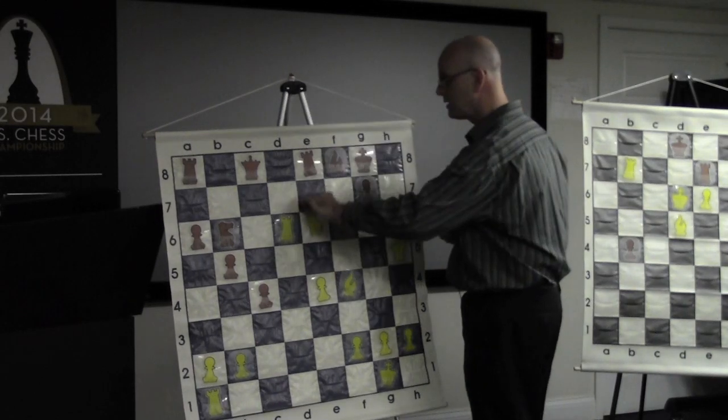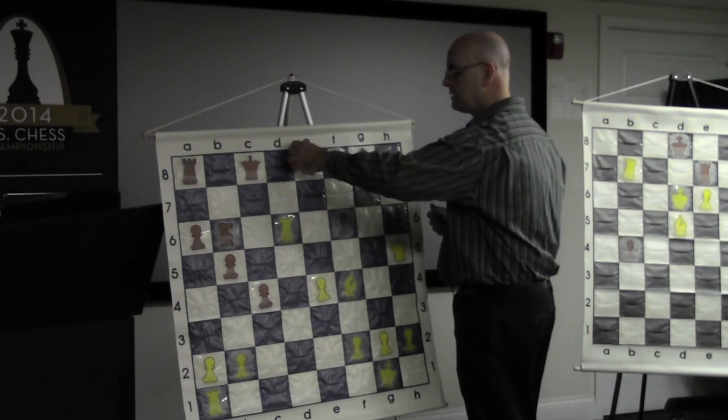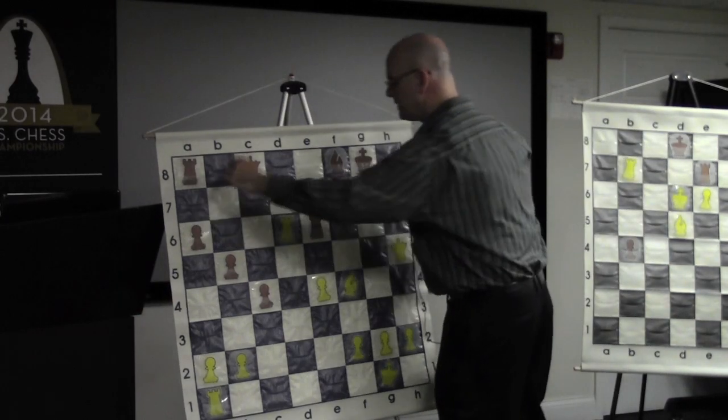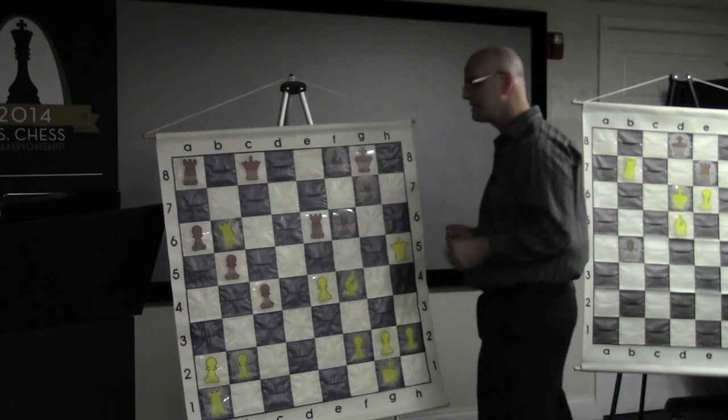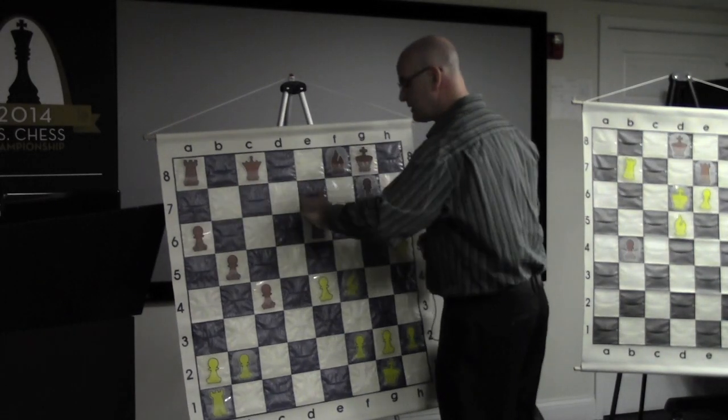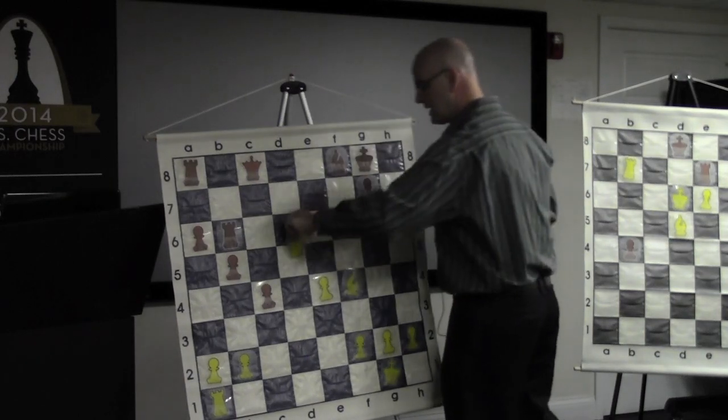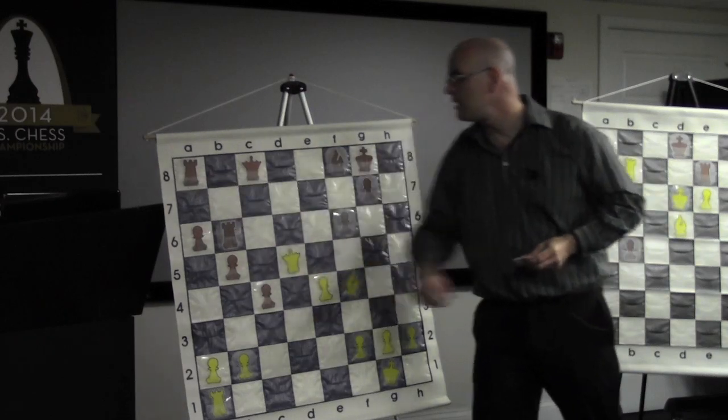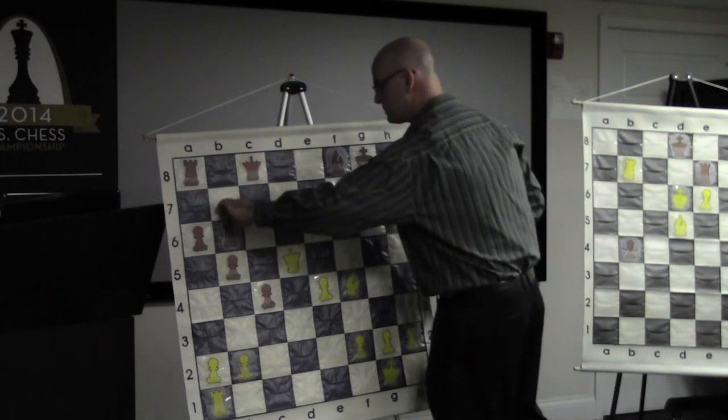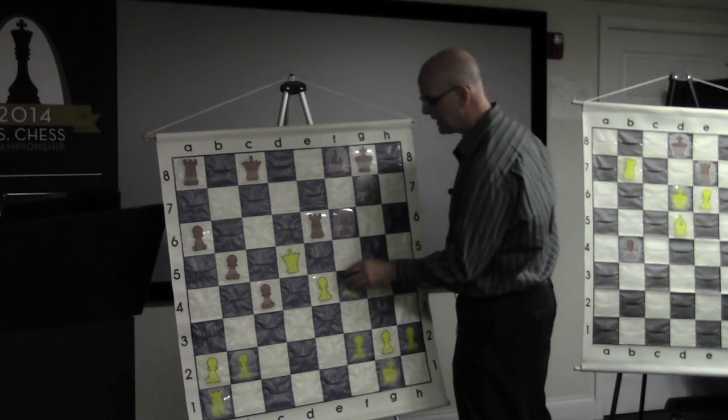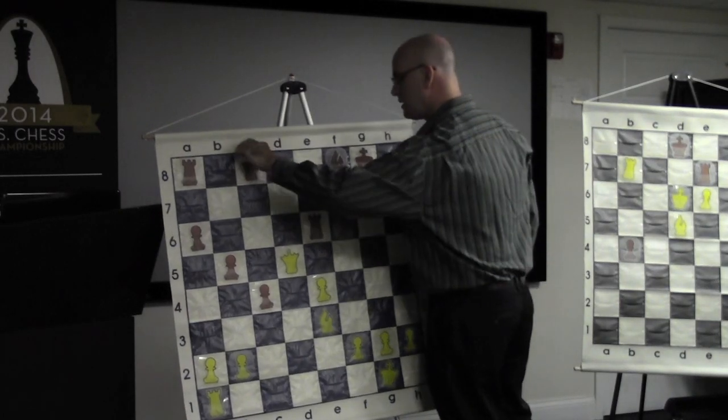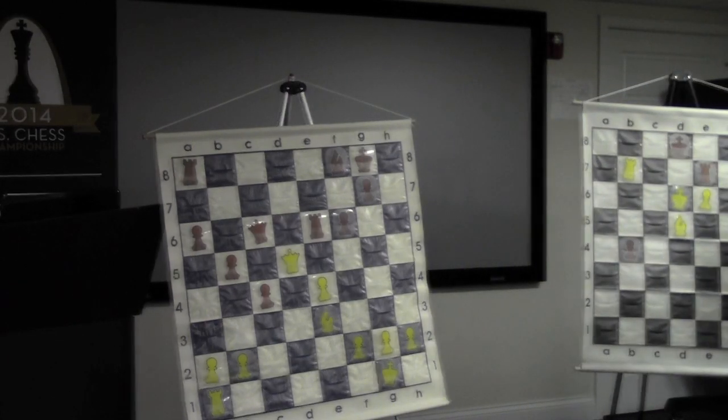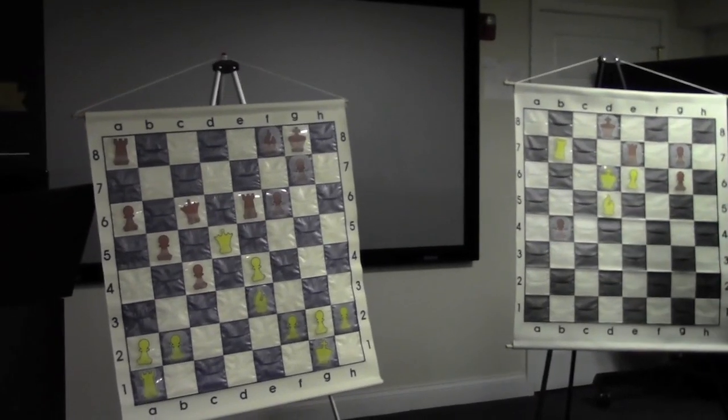He tried a little something here. Rook takes knight, losing more material. Rook takes rook. Now he threw in a check here. He's just hoping I'll blunder and play my queen here and he'll swipe my rook. But of course, I just play this move, and that's all she wrote. Bishop e3. Queen c6. And white's a rook down, so white resigned this one.